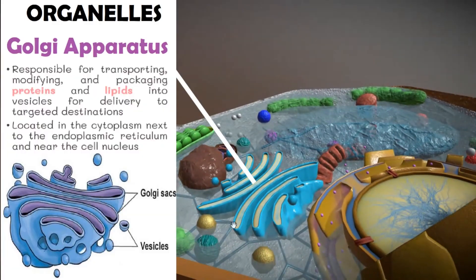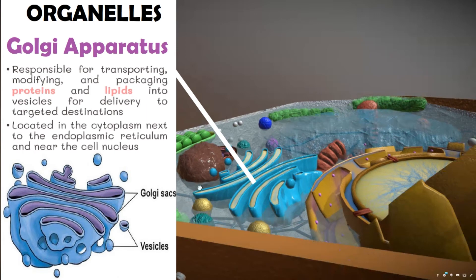Another organelle is the Golgi apparatus. The Golgi apparatus is responsible for transporting, modifying, and packaging proteins and lipids into vesicles for delivery to targeted destinations. It is located in the cytoplasm next to the endoplasmic reticulum and near the cell nucleus. Many types of cells contain only one or several Golgi apparatuses, but plant cells can contain hundreds.